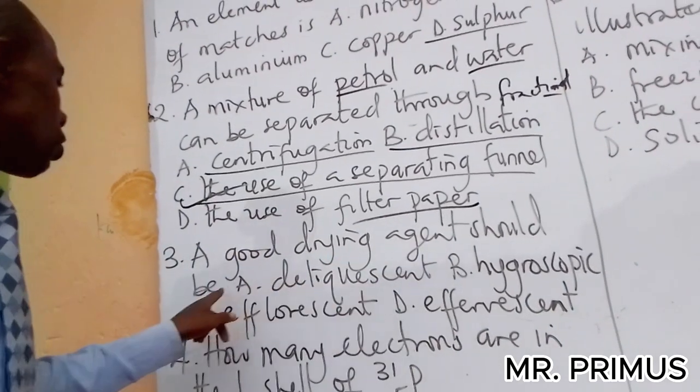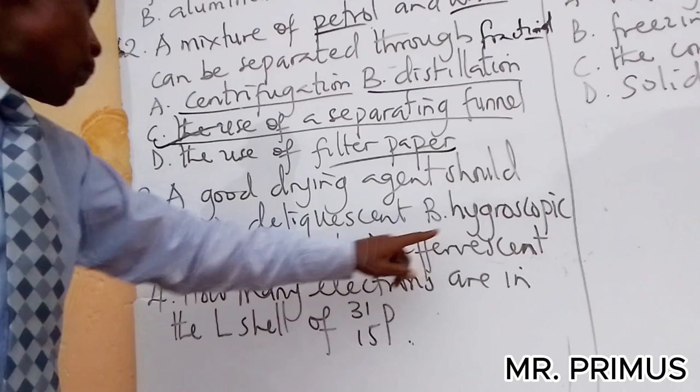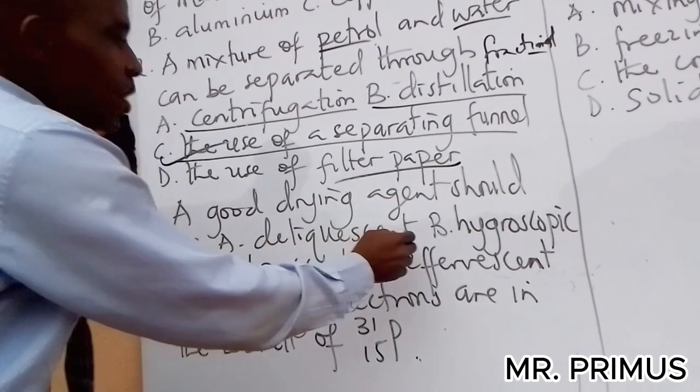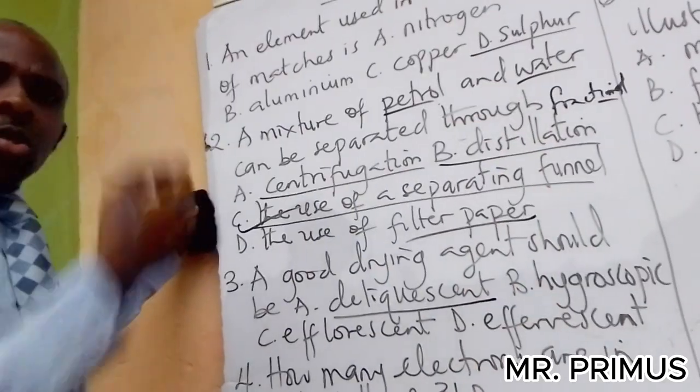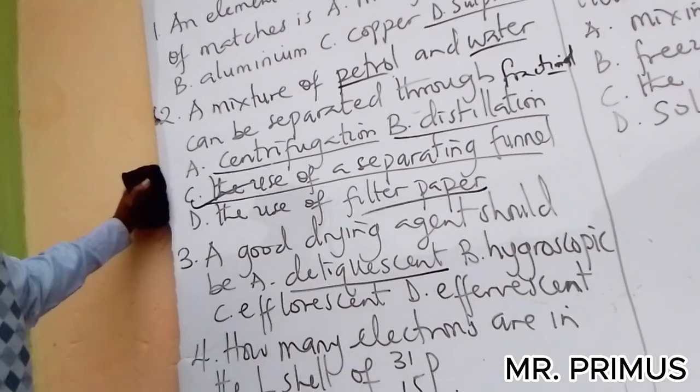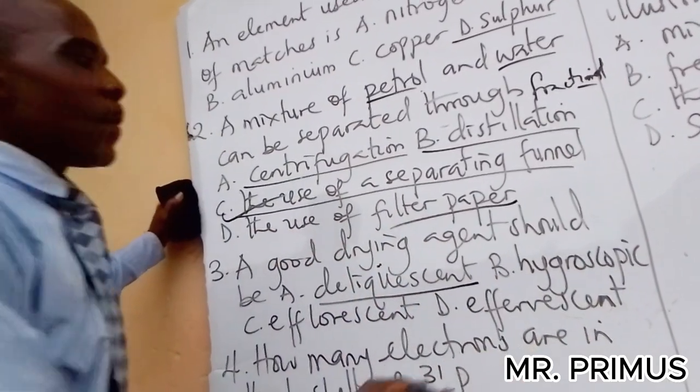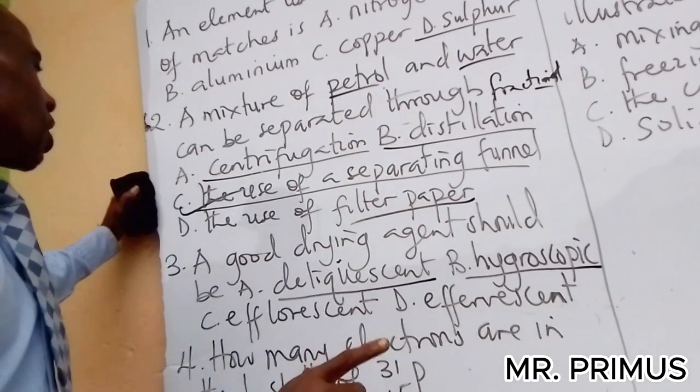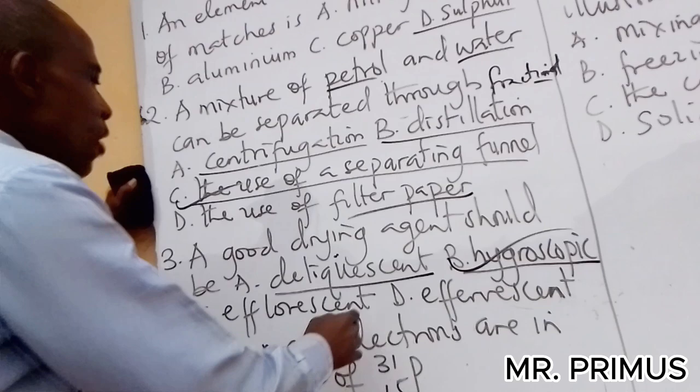Now a good drying agent should be: deliquescent, hygroscopic, efflorescent, or effervescent? Now deliquescent means a substance absorbs moisture and dissolves in it. It absorbs and dissolves in it. But hygroscopic will absorb but not dissolve in it. So a good drying agent should be hygroscopic.